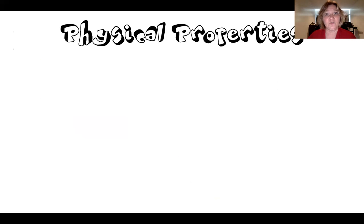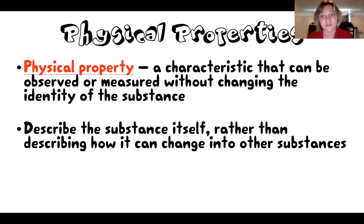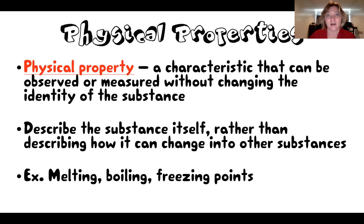We're going to have two different kinds of properties: physical properties and chemical properties. A physical property is a characteristic that can be observed or measured without changing the identity of the substance — it describes the substance rather than how the substance can change. Examples of physical properties include melting, boiling, and freezing points, the process of melting, color, appearance, taste, smell — any way that you can describe something without changing it.